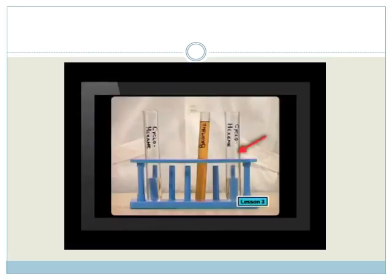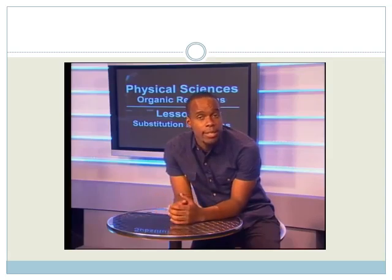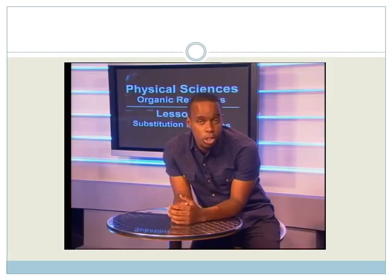When there was an unsaturated compound, the color disappeared quickly. A quick reaction means addition. The second reaction in today's lesson took a much longer time. It also needed the ultraviolet light from sunlight. A slow color change means that this compound is saturated.